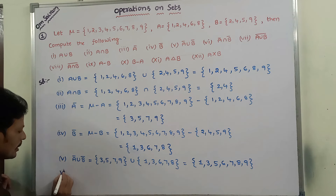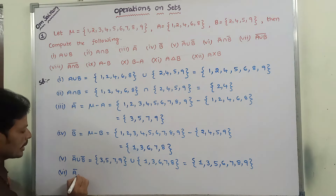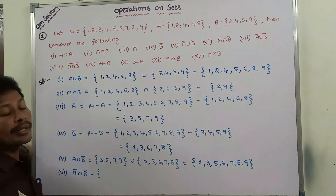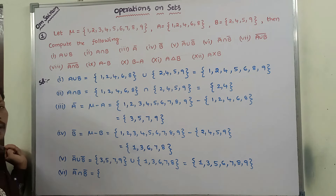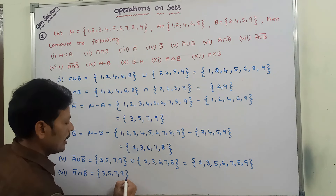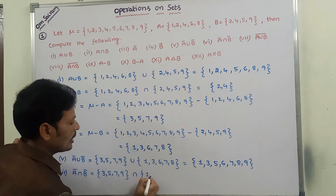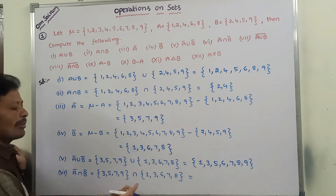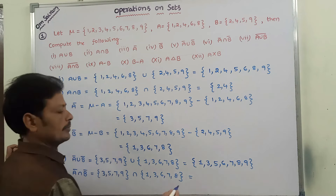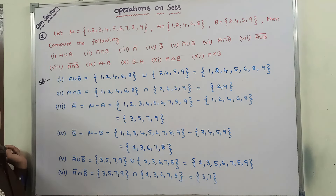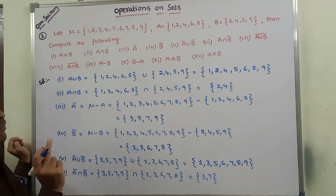Sixth, A bar intersection B bar: the common elements between A bar and B bar. A bar = {3, 5, 7, 9} intersection B bar = {1, 3, 6, 7, 8}. The common elements are 3 and 7. Therefore, A bar intersection B bar = {3, 7}.